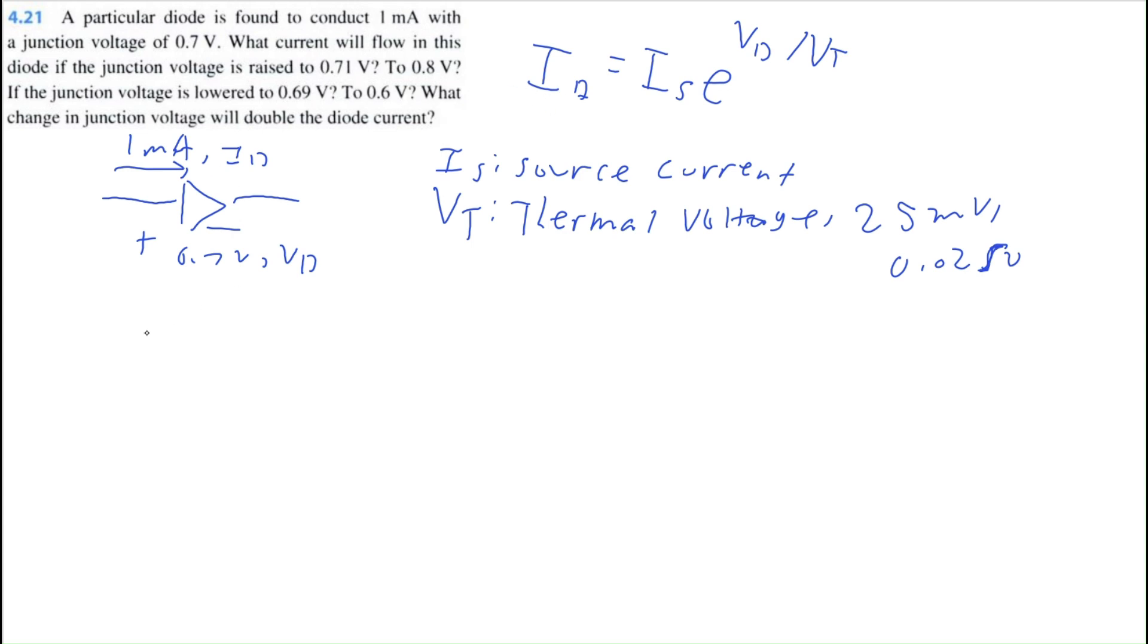So let's set up an equation based on this information. So we have our diode current, 1 milliamp. We were not given our source current Is, raised to the exponential function, Vd 0.7 volts divided by 0.025 volts. But what if I want to find the junction voltage raised to 0.71 volts?